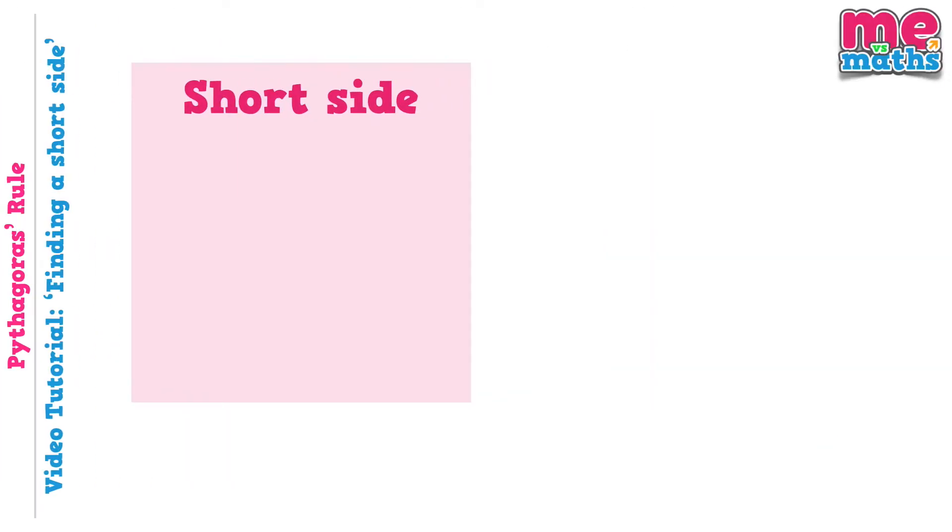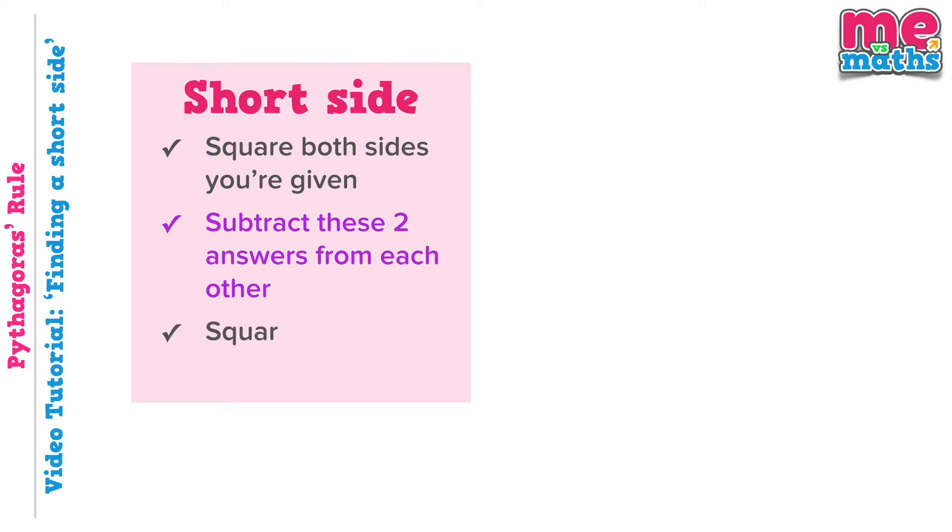Now obviously we also need to know how to find a shorter side as well. We're still going to square both the sides that we're given. However this time, because we're looking for a shorter side, we're going to do the opposite of what we did previously. So instead of adding them together, we're going to subtract our two answers from each other. And then finally, just as before, square root to get our answer.